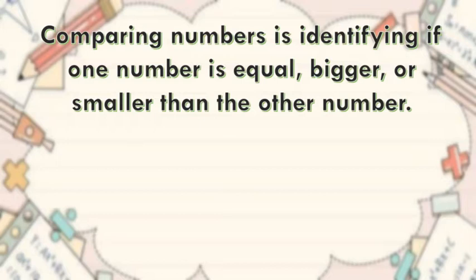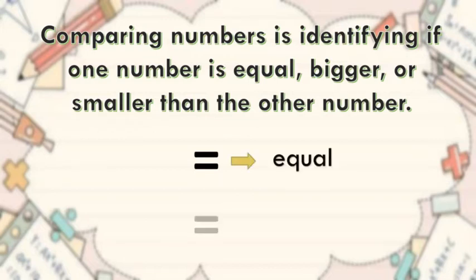We use different signs to compare numbers. One of the symbols is this, which means equal. We use it when the number we are comparing is the same.